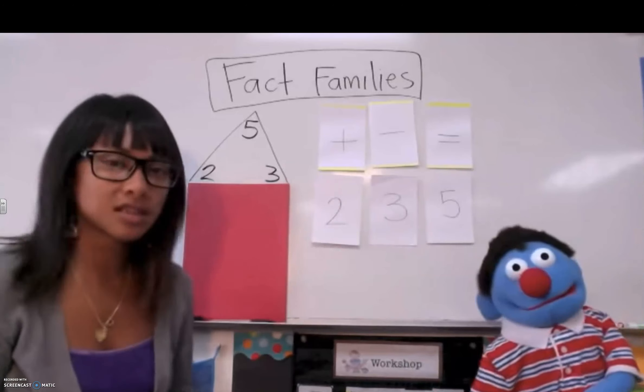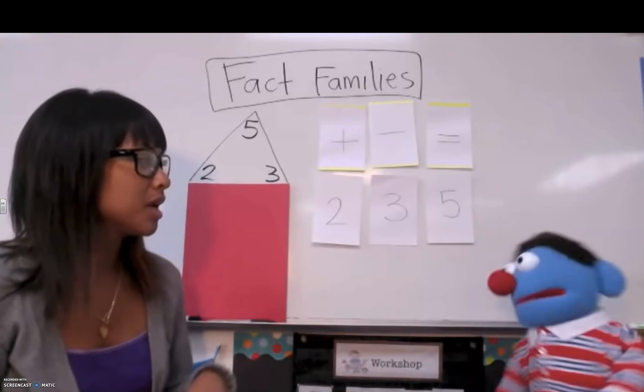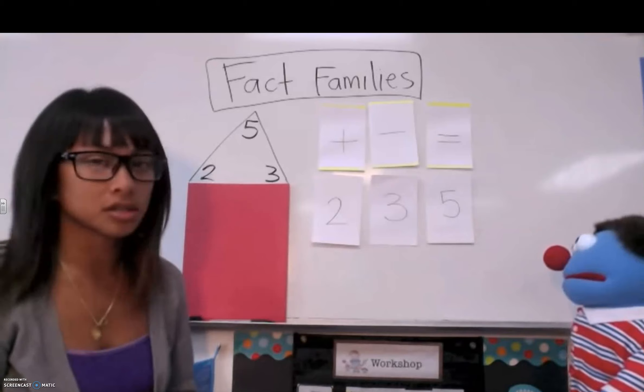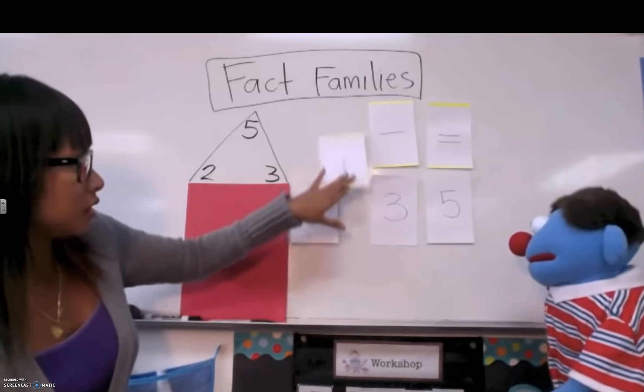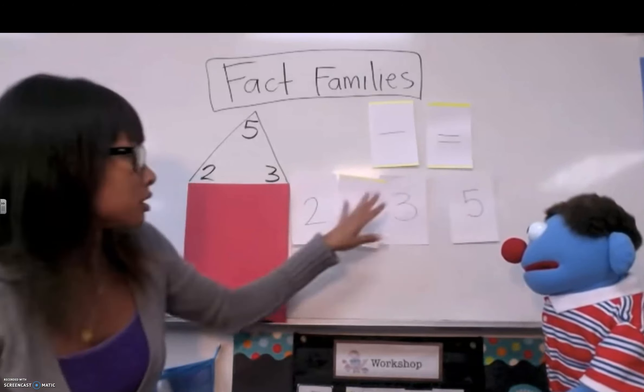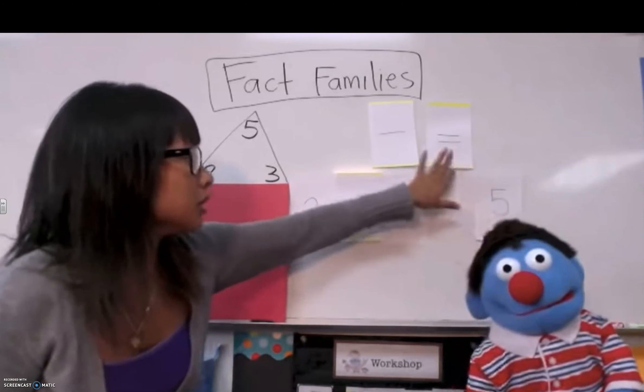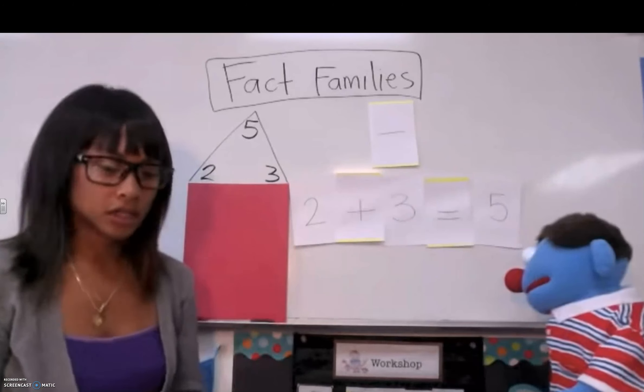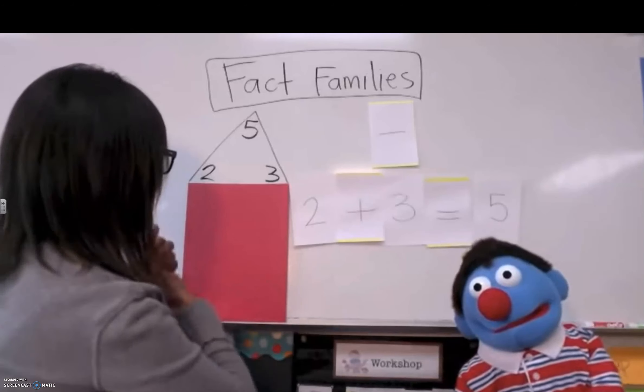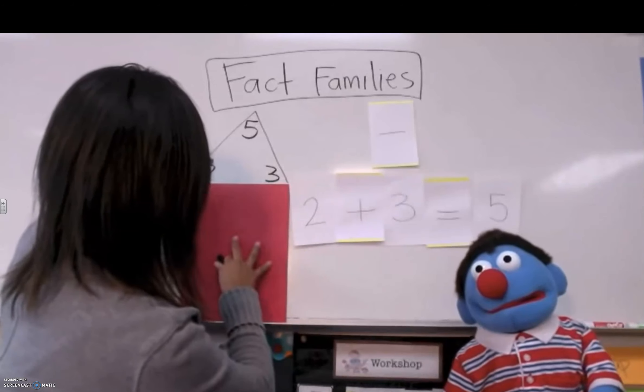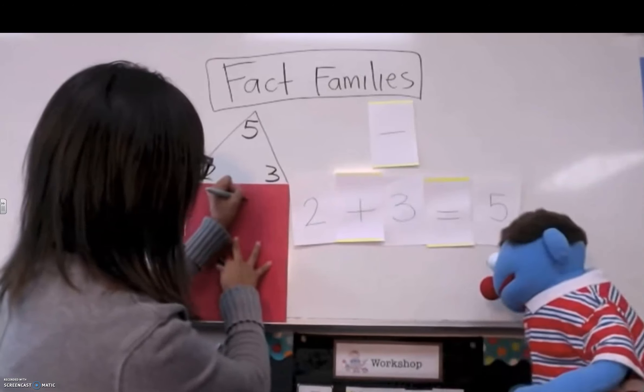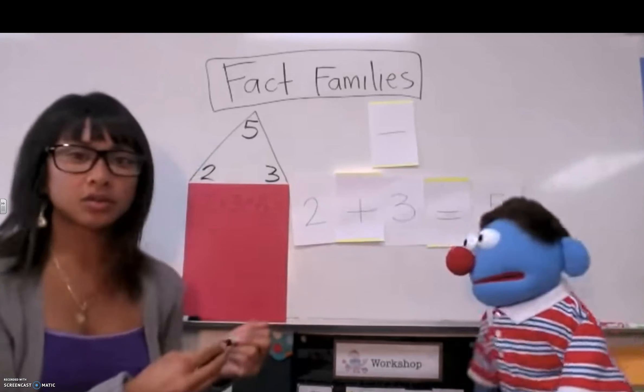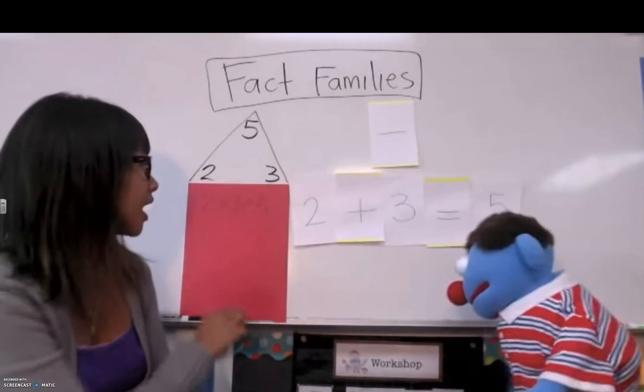And they're going to go together in some way so that I can add them and then they can equal one of the numbers. So I have, I can do two plus three and that equals... That's five! Yeah, because two plus three equals five. So that is one of my fact family. So I would do two plus three and that equals five.